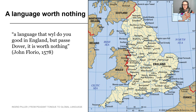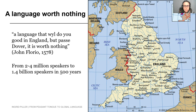It almost seems unbelievable that English, which to us seems all-important to get to any position anywhere in life, was such a peripheral and small language. At the time, it was spoken by 2 to 4 million people — the inhabitants of England. And within less than 500 years, the number of English speakers has exploded from those 2 to 4 million to 1.4 billion. That's a 700-fold increase over a couple of centuries.